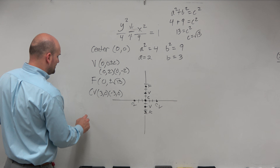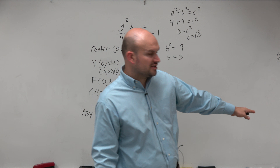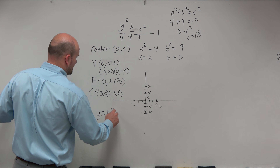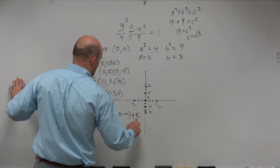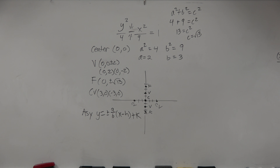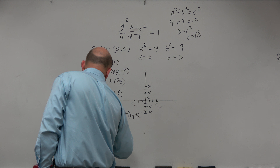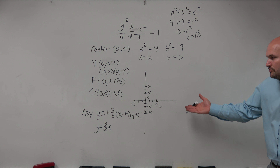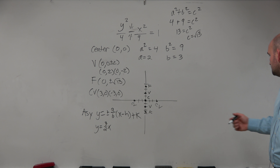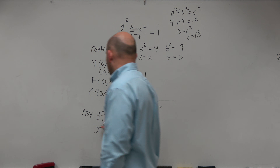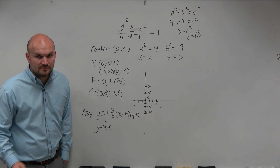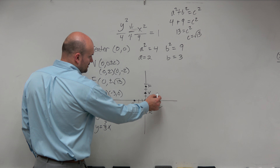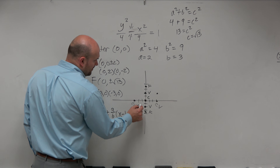The last thing we could ask on hyperbolas is the asymptotes. For a vertical hyperbola, the equation is y equals plus or minus a over b times (x minus h) plus k. So y equals plus or minus 2 thirds times x, because h and k are both 0. Is 2 thirds x really that difficult to graph? No — you go up 2 over 3. Or you could go down 2 over 3. So those are your two asymptotes.